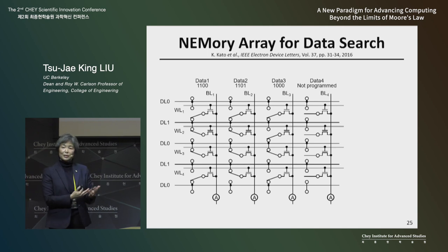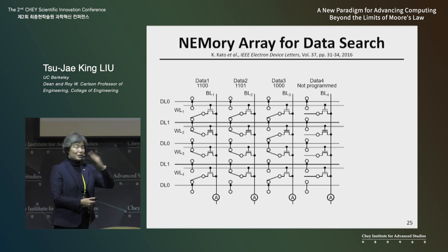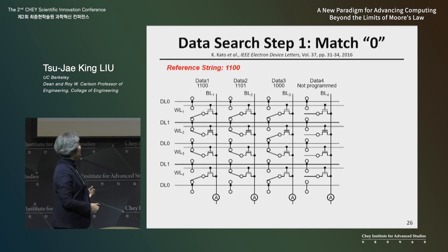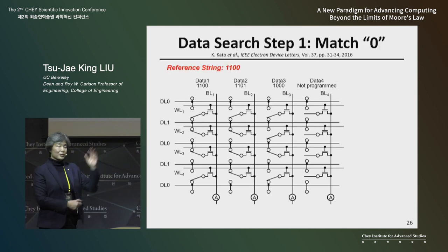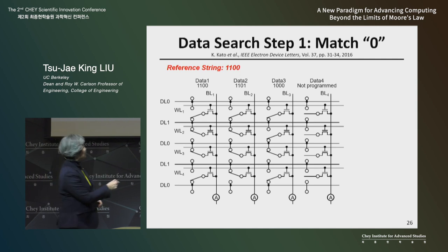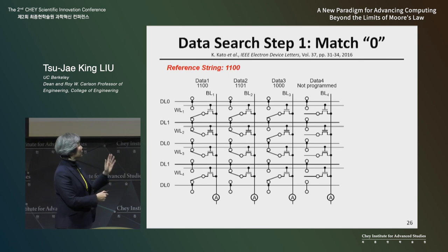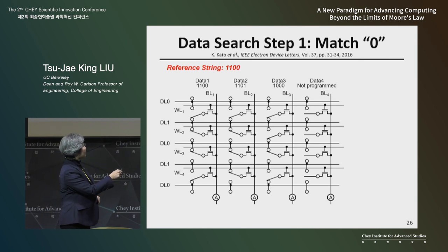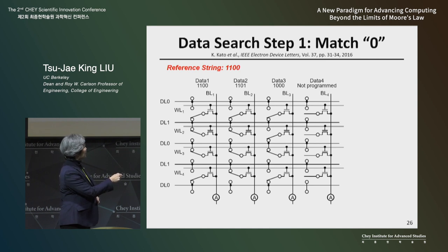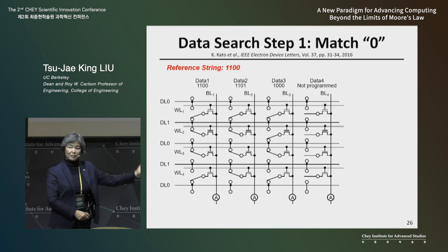Let me give you one example of what you can do with this technology. If we have these movable switches integrated with transistors, we can store information in rows and columns — one column represents one string of data, such as one, one, zero, zero. The beam in the first row is connected to data line one, the second row is also connected to data line one, the third row is connected to data line zero, and the last row to data line zero. Every single column stores some information like this.